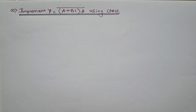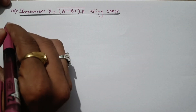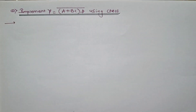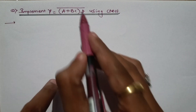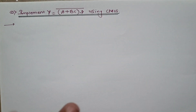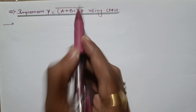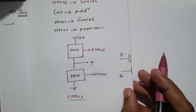Hello everyone, namaskar. In this video we will see an example on implementation of a given function using CMOS — complementary metal oxide semiconductor. Here is the question: y equals (A + BC · D) whole bar. To implement this, we have two operators: plus and multiplication.